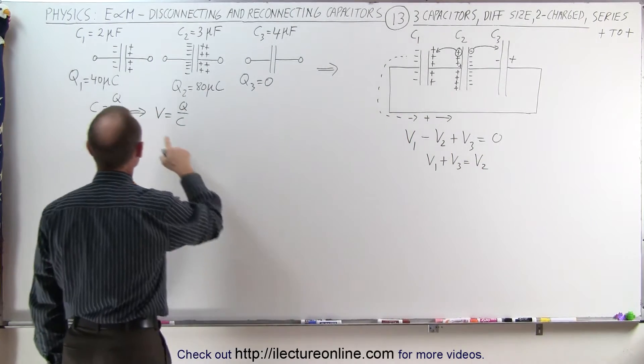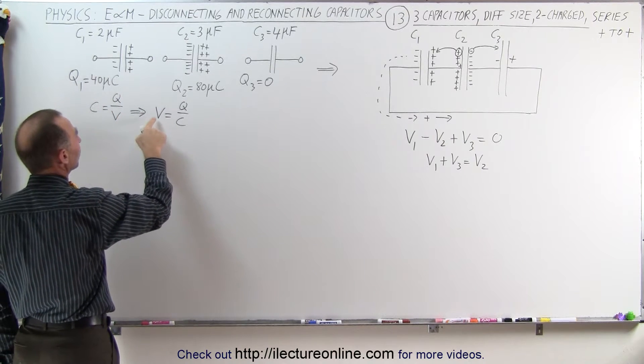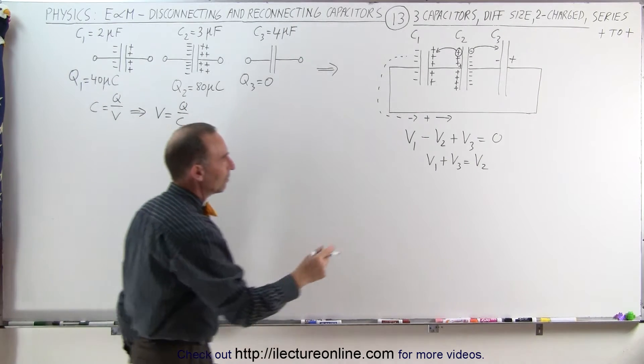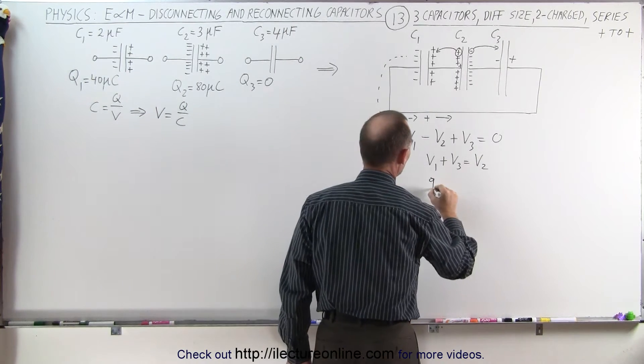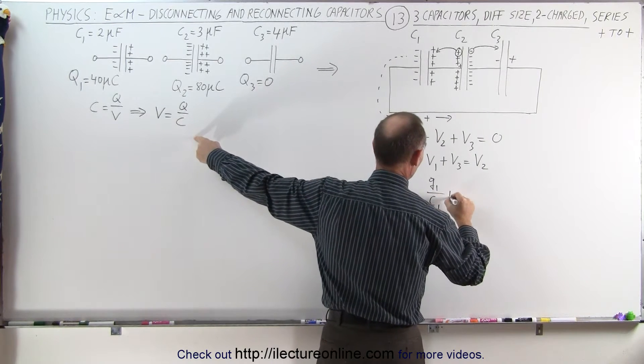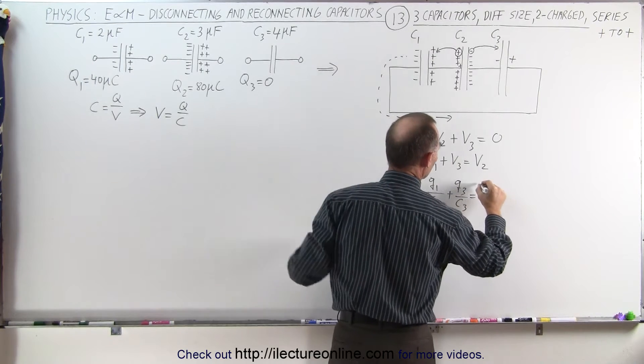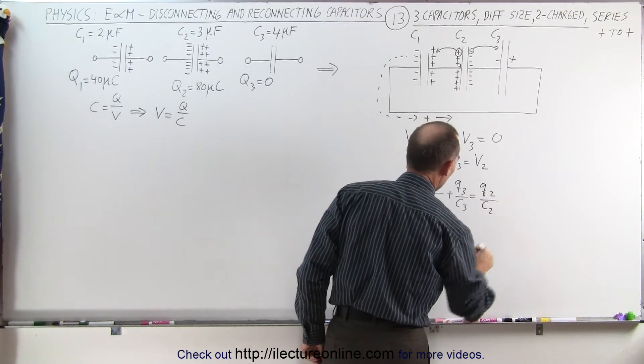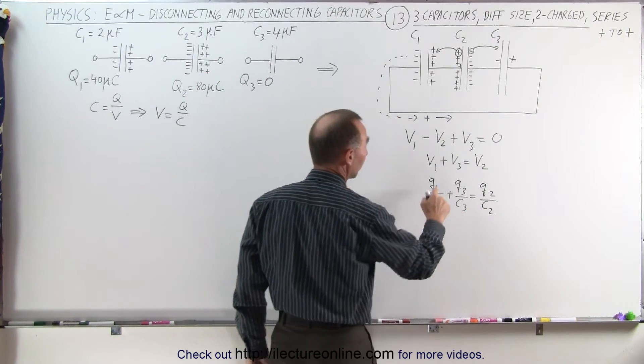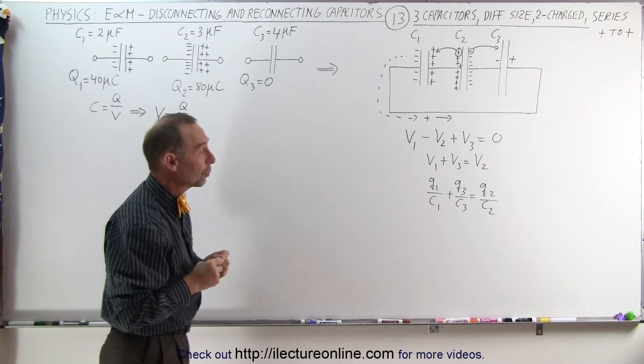And then going back to the definition of capacitance, which is the charge over the voltage, which means the voltage can be defined as the ratio of the charge divided by the capacitance, which means that we can write this as Q1 over C1 plus Q3 over C3 is equal to Q2 over C2. C1, C2, and C3 are the capacitance of the three capacitors, and Q1, Q2, and Q3 are the final charge on the three capacitors.